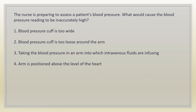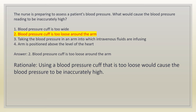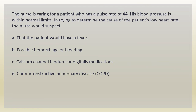The nurse is preparing to assess a patient's blood pressure. What would cause the blood pressure reading to be inaccurately high? 1. Blood pressure cuff is too wide. 2. Blood pressure cuff is too loose around the arm. 3. Taking the blood pressure in an arm into which intravenous fluids are infusing. 4. Arm is positioned above the level of the heart. Answer: 2. Blood pressure cuff is too loose around the arm. Rationale: using a blood pressure cuff that is too loose would cause the blood pressure to be inaccurately high.